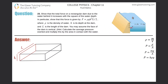Number 23: show that the total force on a rectangular dam due to the water behind it increases with the square of the water depth. In particular, show that this force is given by F = ρgh²l/2, where ρ is the density, h is the depth, and l is the length of the dam. You may assume the face is vertical. The hint is: calculate the average pressure exerted and multiply by the area in contact with the water.